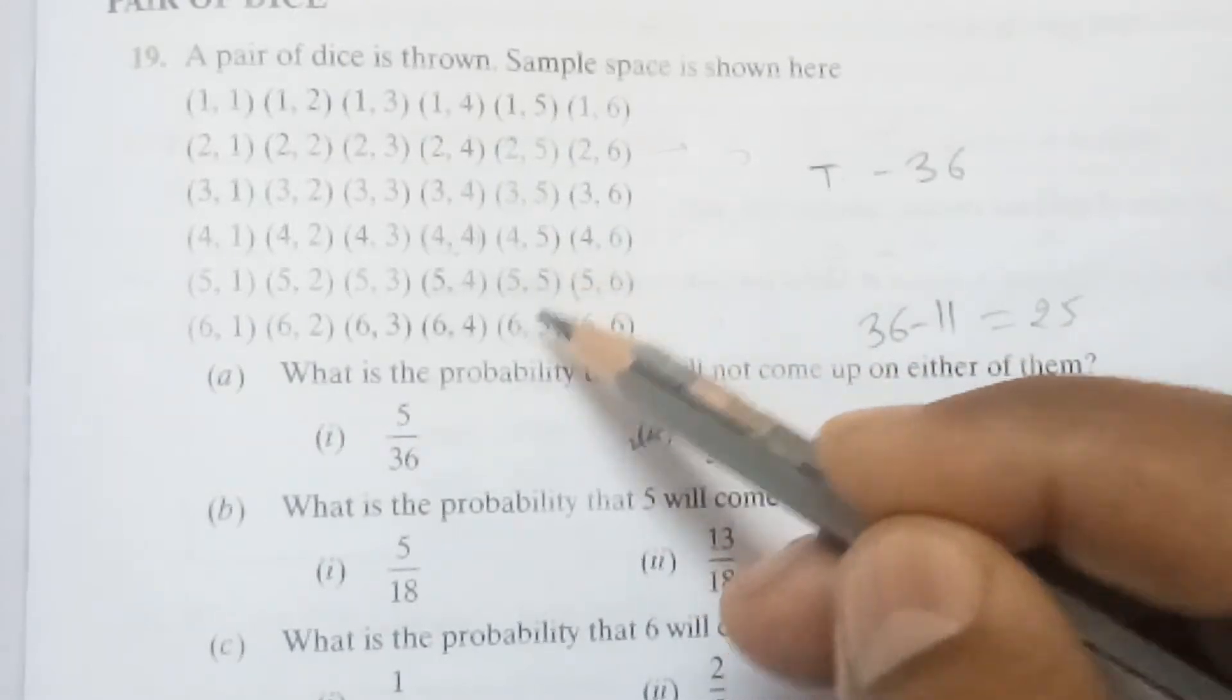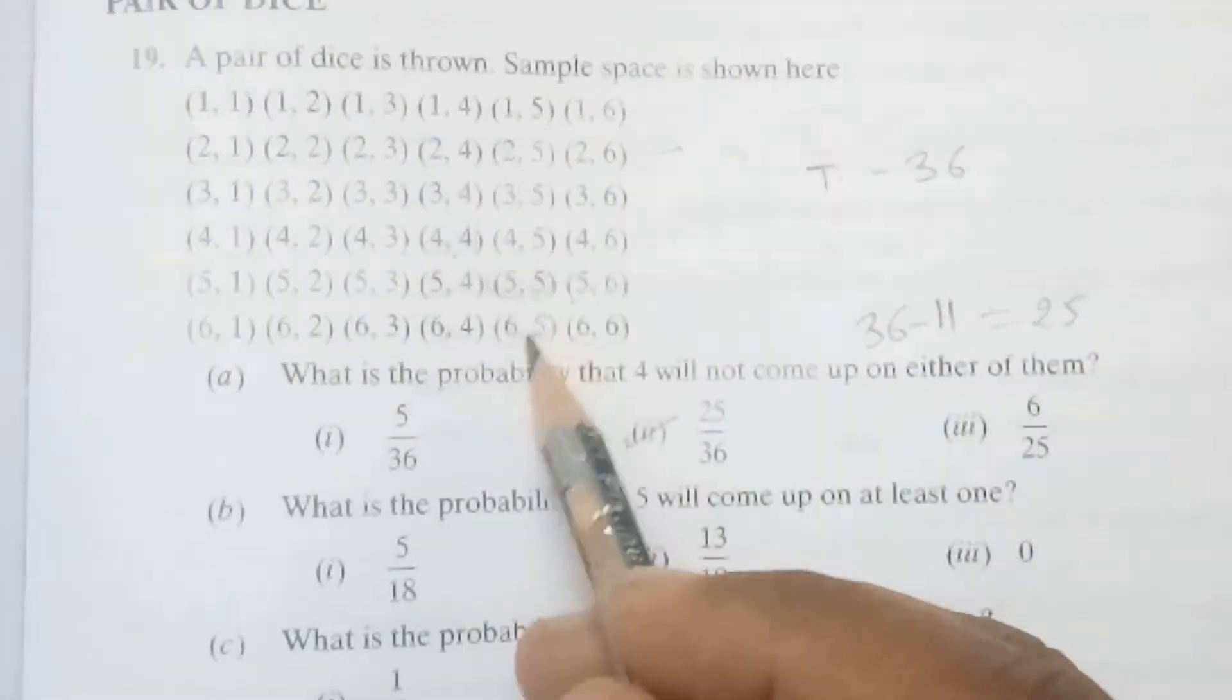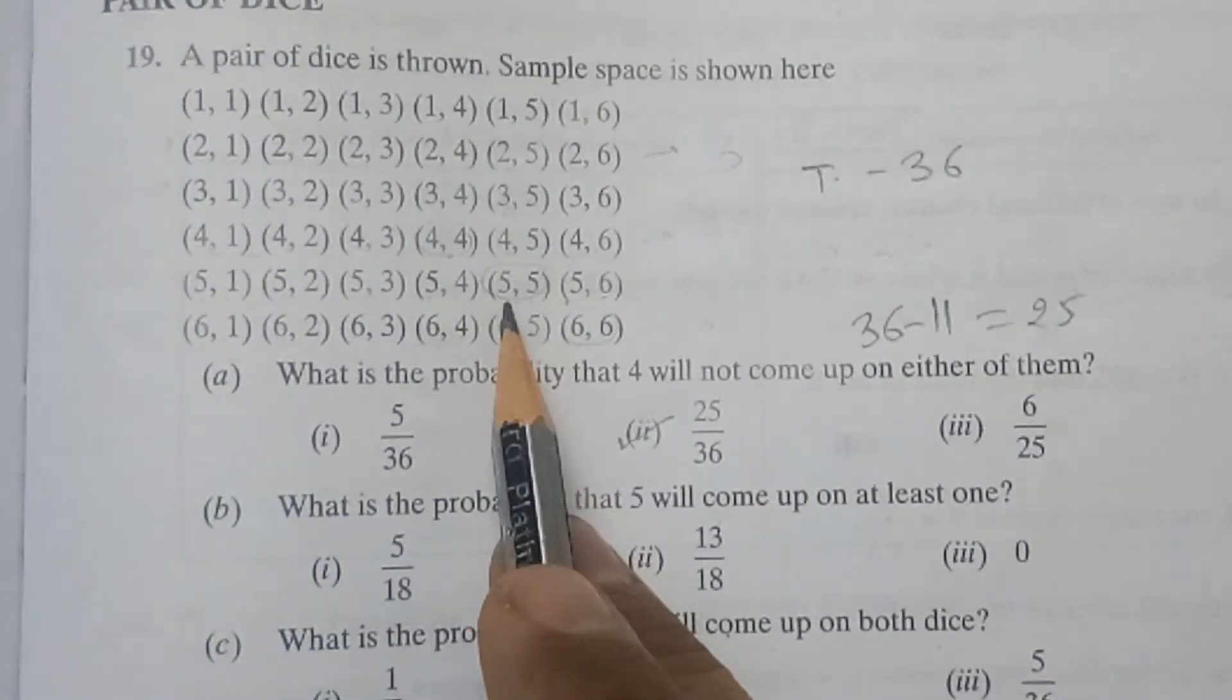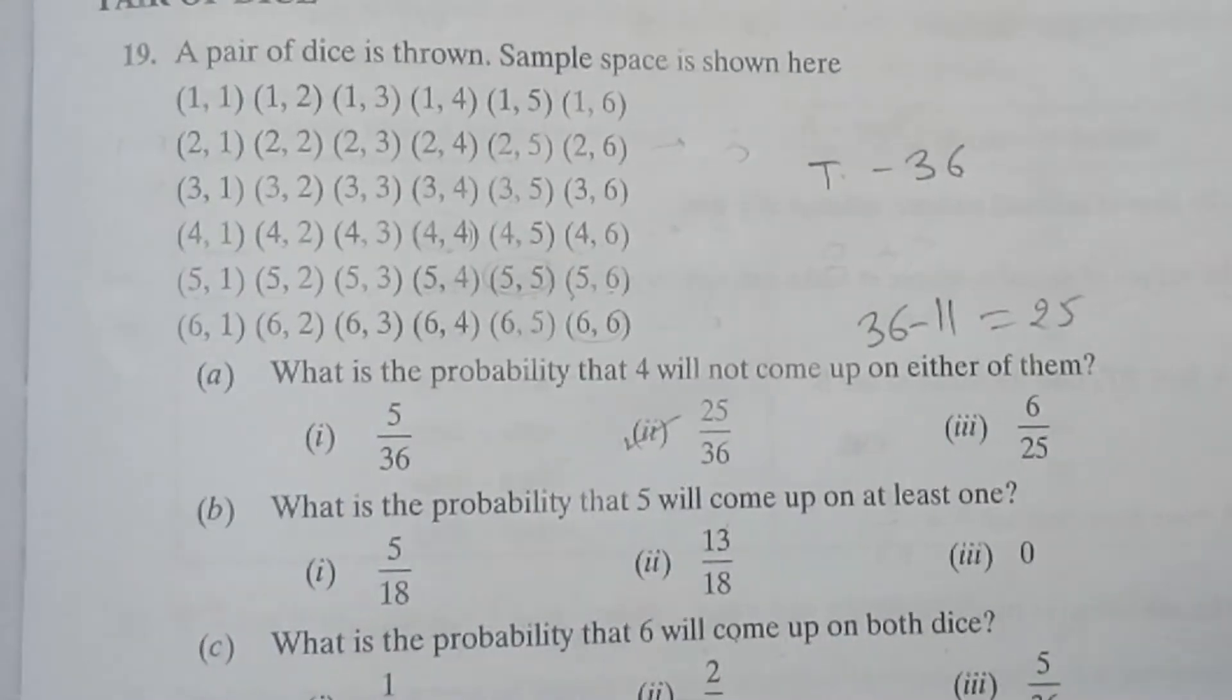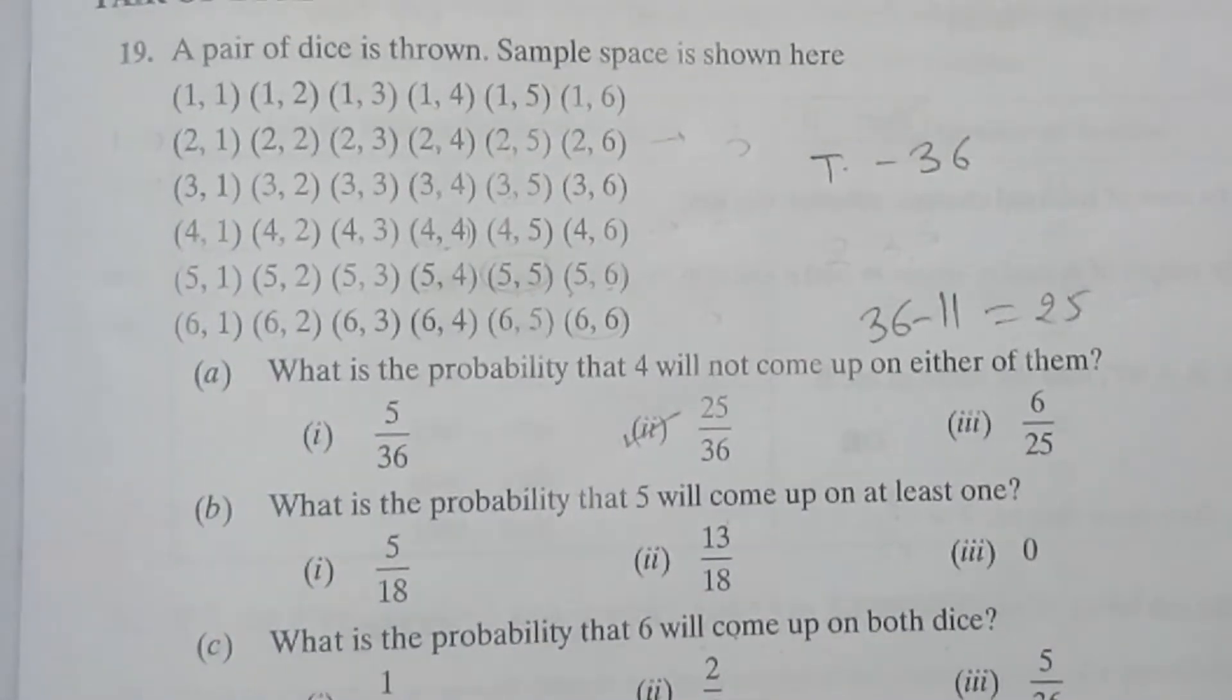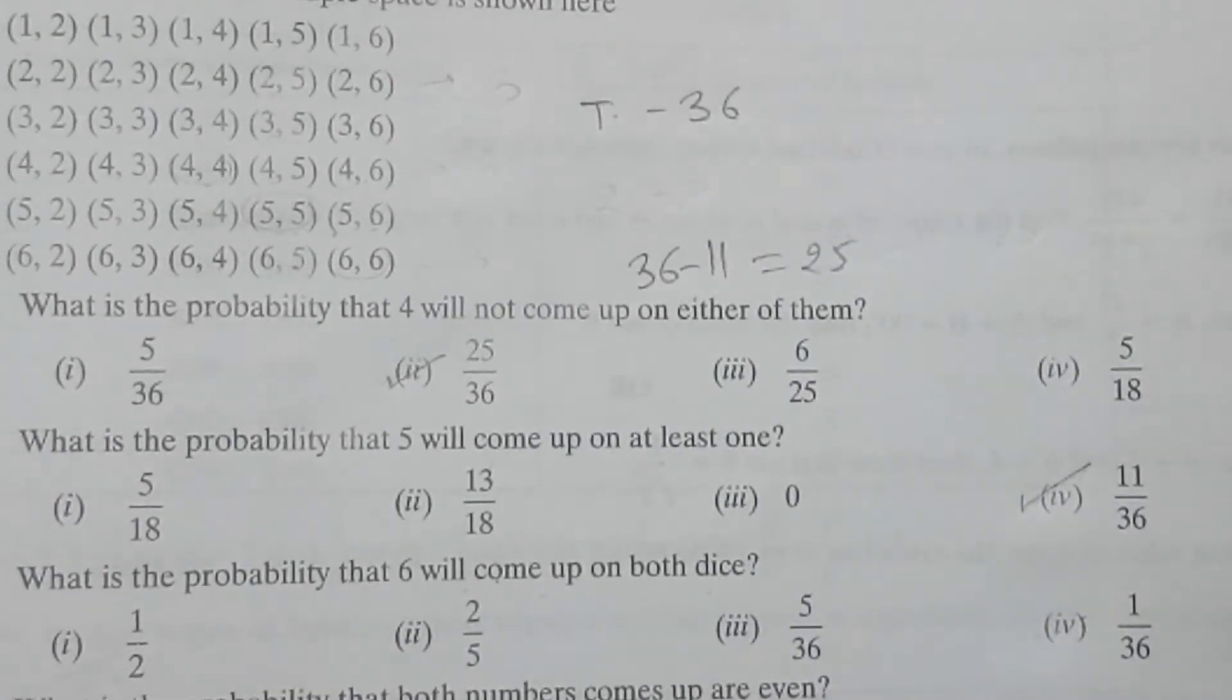(4,5), (5,5), (6,5). Here (5,5) will be counted twice if we consider it like the previous case. Here 5 will come 11 times where it will come once, so probability will be 11 by 36. This is the answer: 11 by 36.